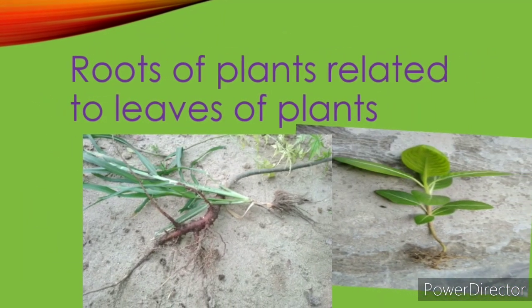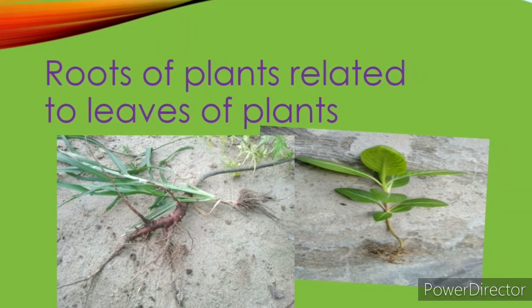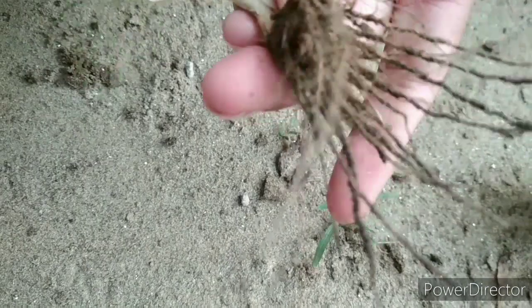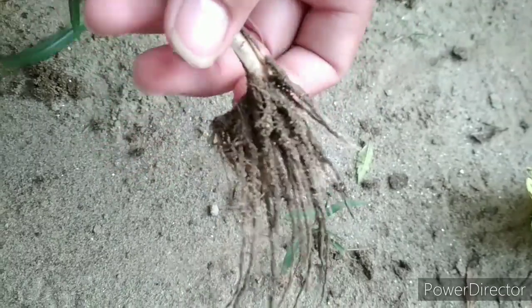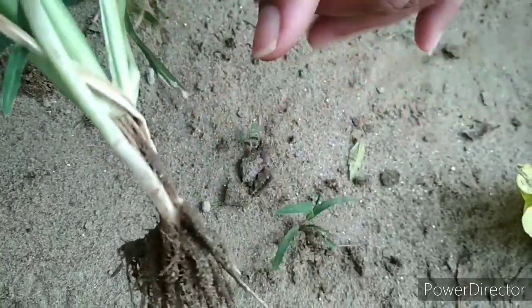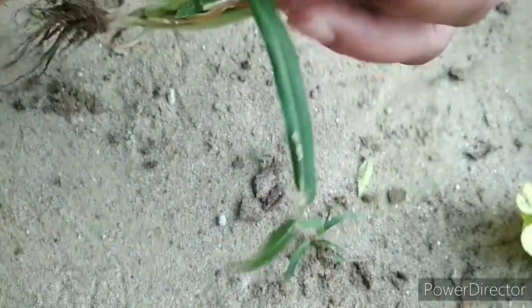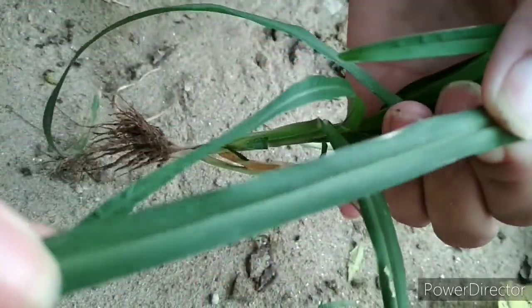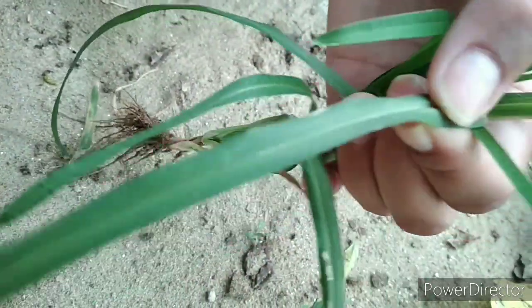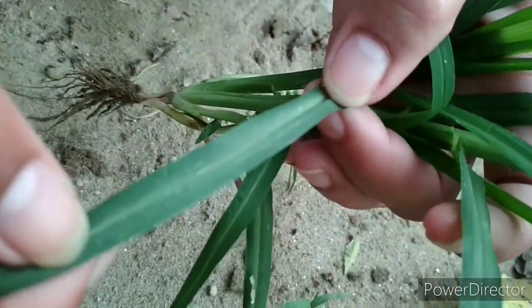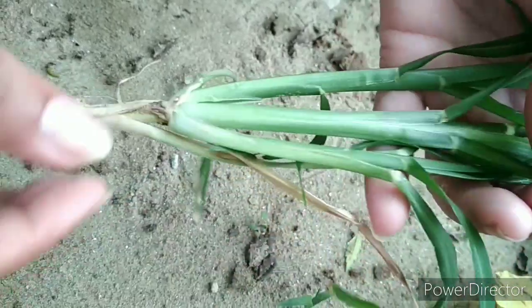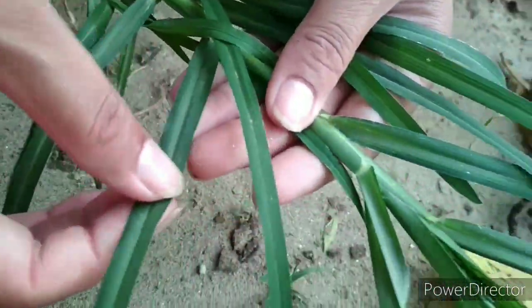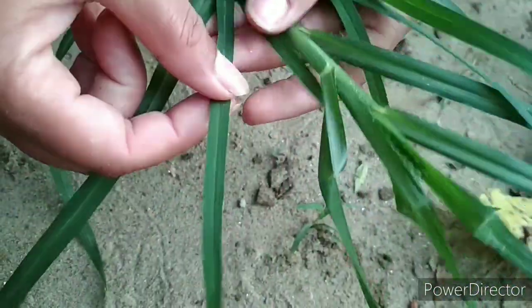The roots of a plant are related to the leaves of the plant. This is a fibrous root. The leaf of a plant with fibrous roots has parallel venation. The plant that has a fibrous root — the leaves of that plant have parallel venation.